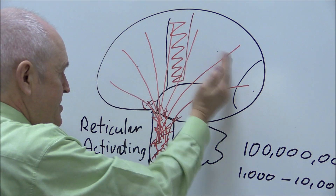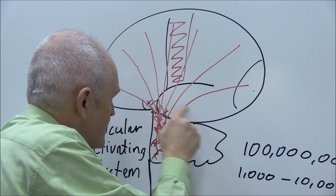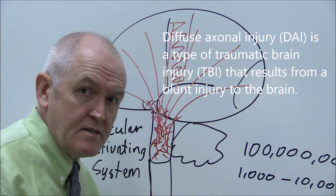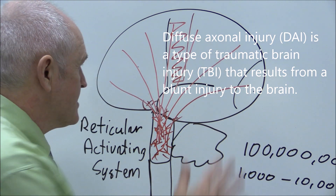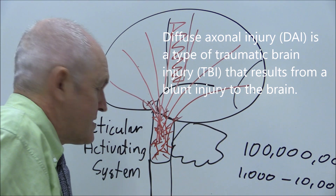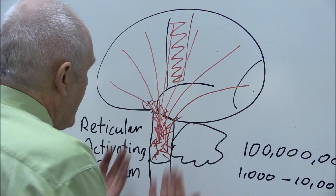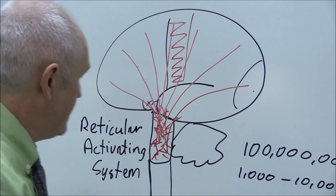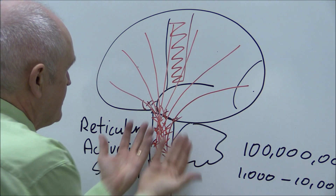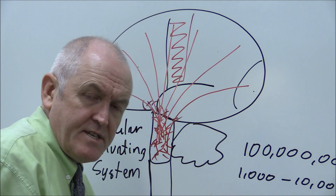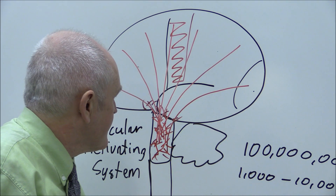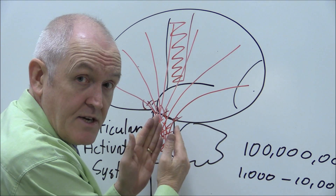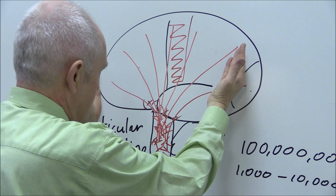If someone has a head injury and they damage some of these fibers, they will be unconscious for a period of time — could be seconds, could be years — depending on the degree of injury to these axonal fibers, these white fibers going from where consciousness is generated in the brainstem by the reticular activating system, to all parts of the cerebrum where it is experienced. That is something about consciousness generation and the experience of consciousness.